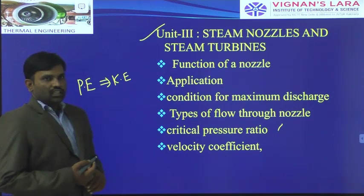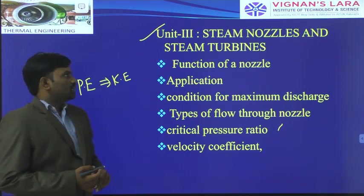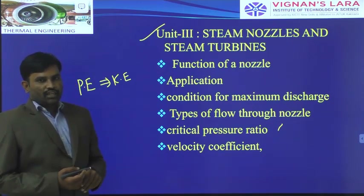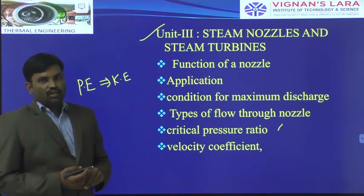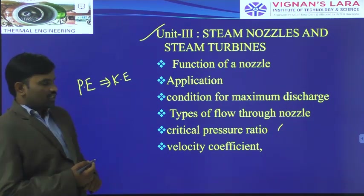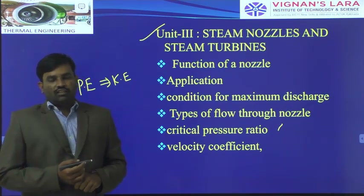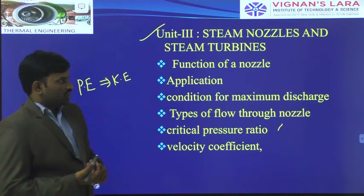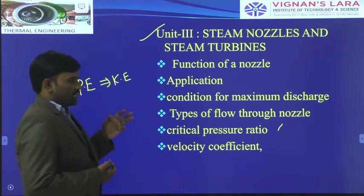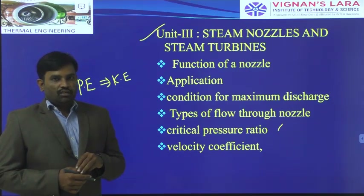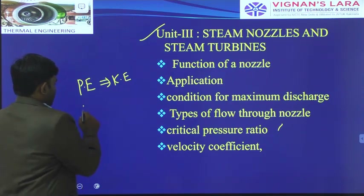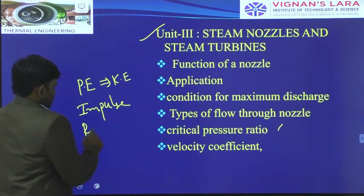In the case of a steam power plant, we connect that turbine shaft to the generator section. In Unit 3 we will see how the pressure energy of steam is converted into kinetic energy, what happens with the different types of nozzles, how much velocity of steam we generate to rotate the turbine wheel, and how much power output we generate from the steam turbine. We use two different types of turbines: impulse turbine and reaction turbine.